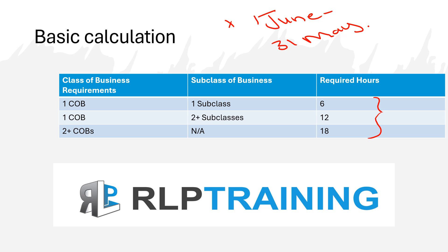If our representative, key individual, or natural person FSB — also known as a sole proprietor or single-owned FSB — is appointed or approved under one class of business and one subclass of business. For example, approved under the class of business short-term insurance, personal lines, and subclass A1, that's 6 hours required: one class of business, one product category, 6 hours.